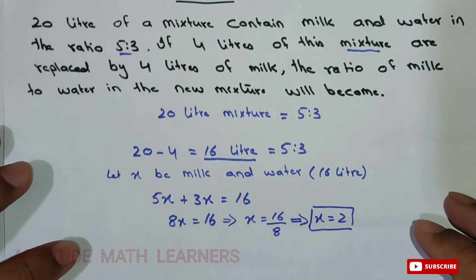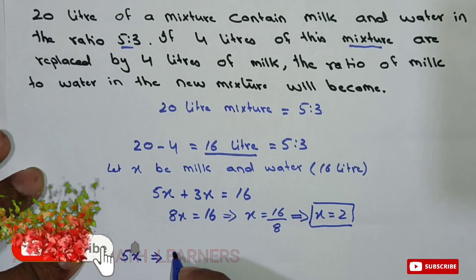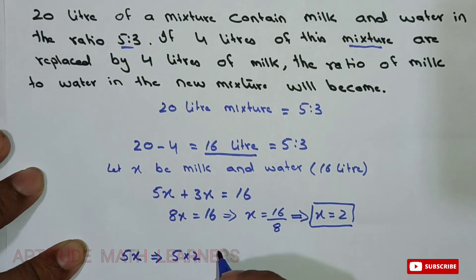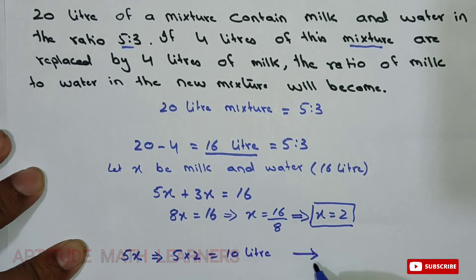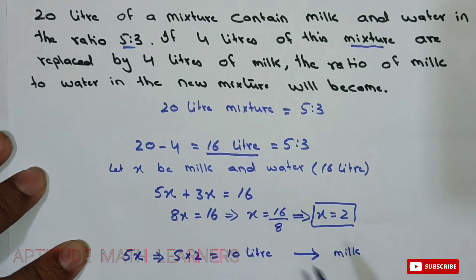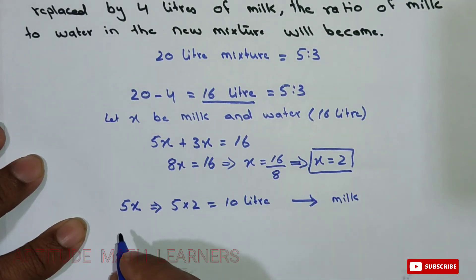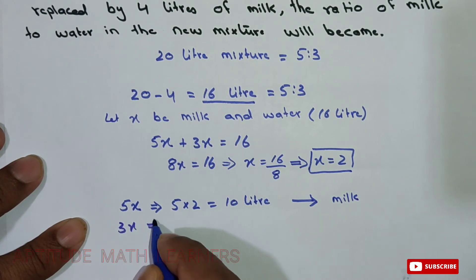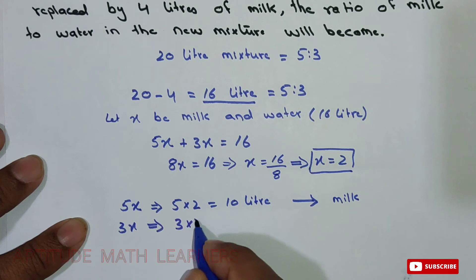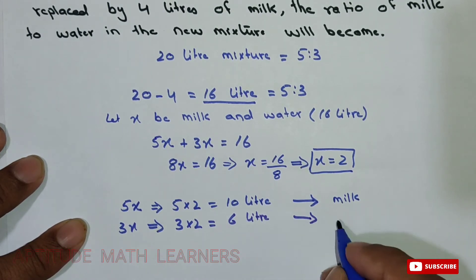Now to find the quantity of milk: 5x equals 5 multiplied by 2 equals 10 litres — that is the milk in 16 litres. And for water: 3x equals 3 multiplied by 2 equals 6 litres — that is the water in 16 litres.